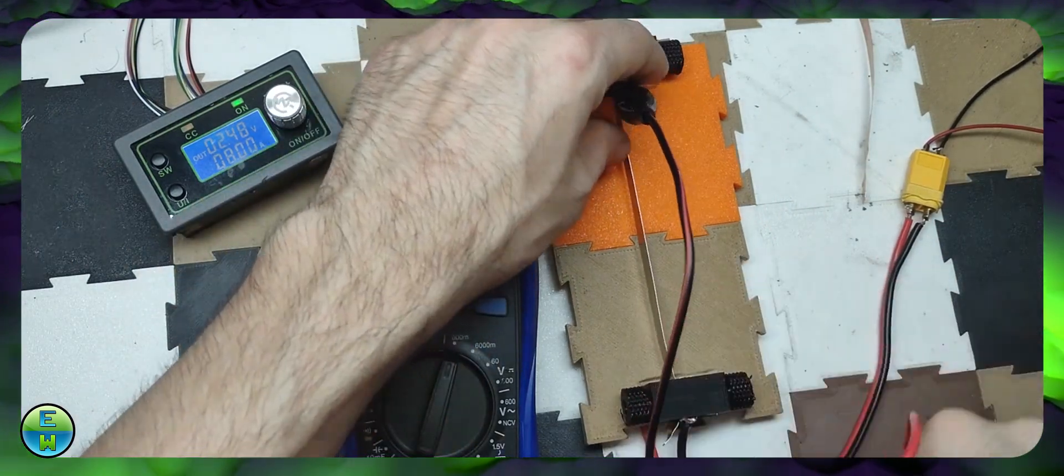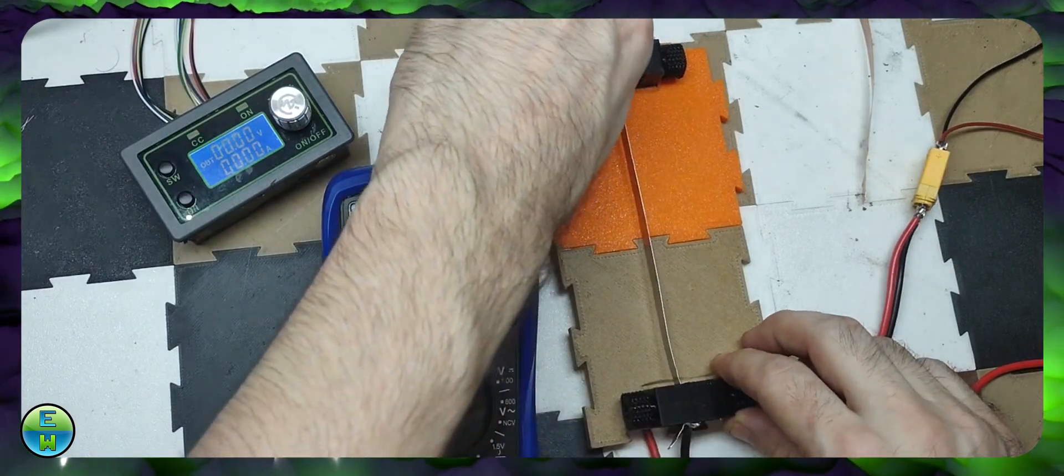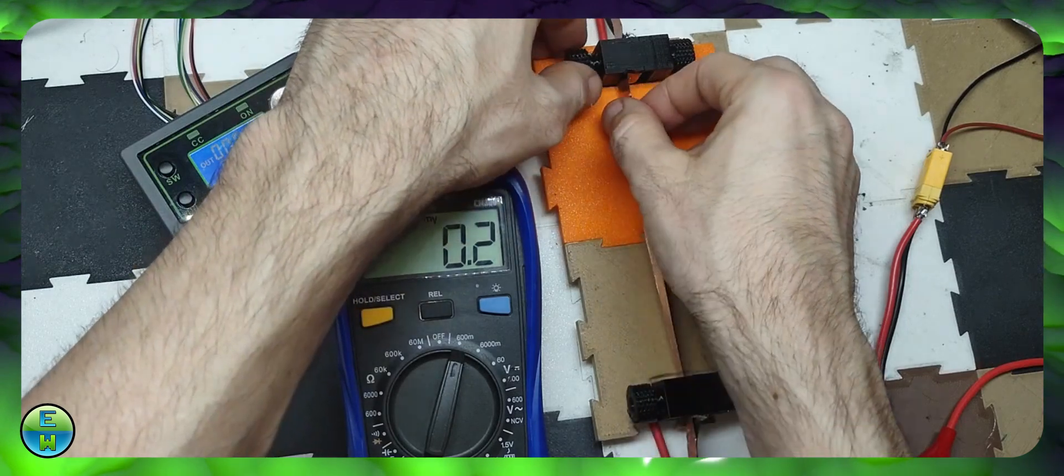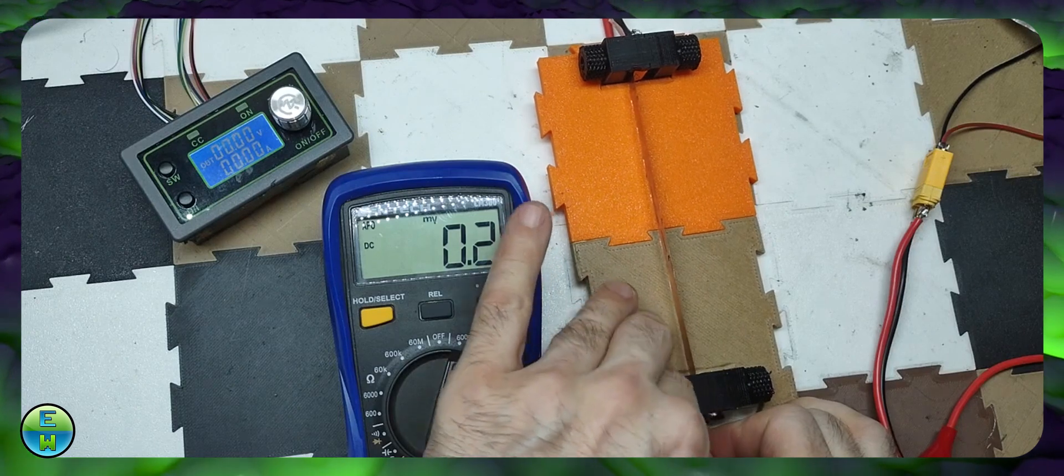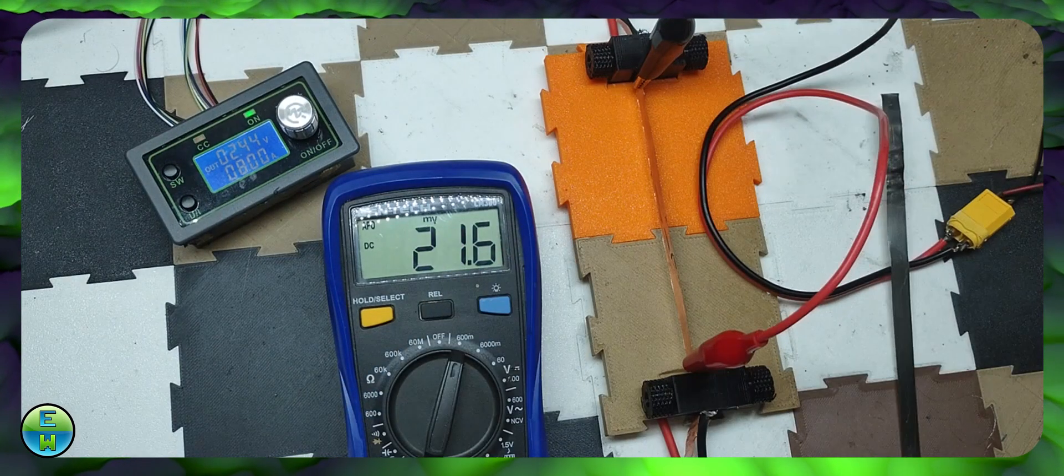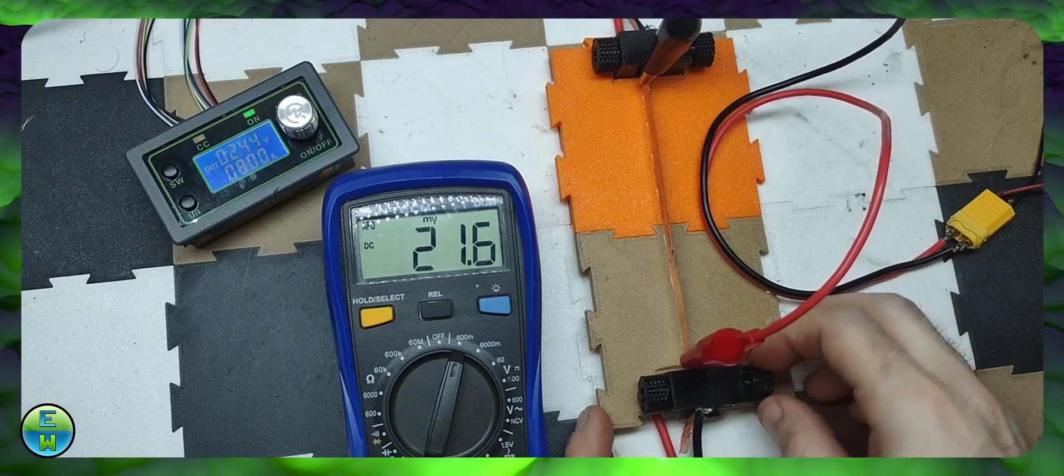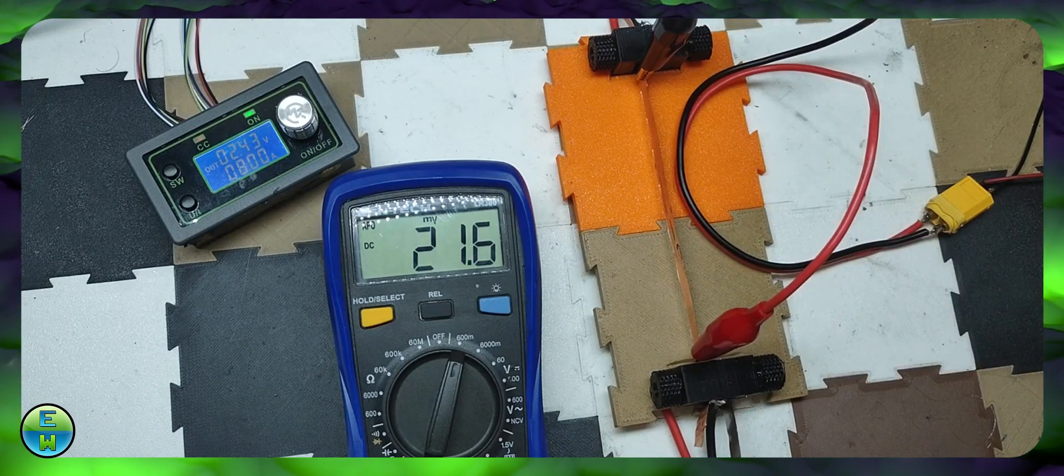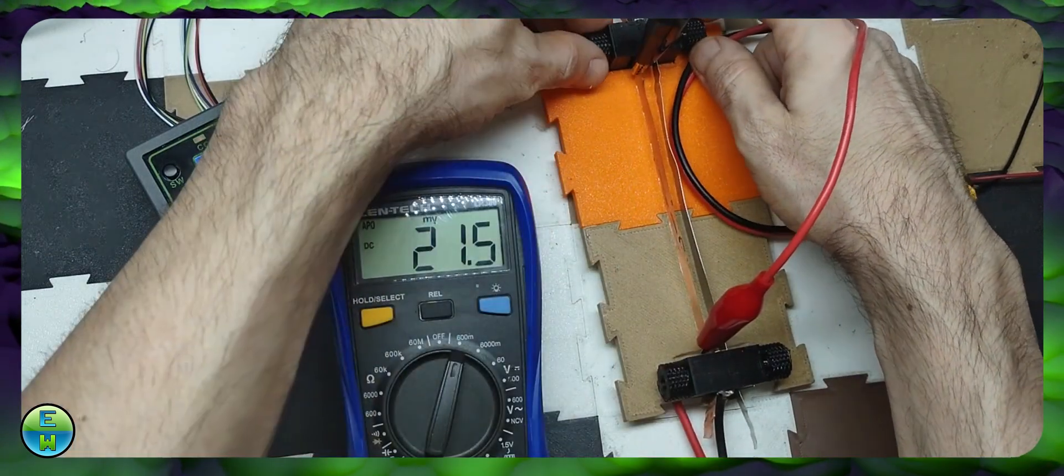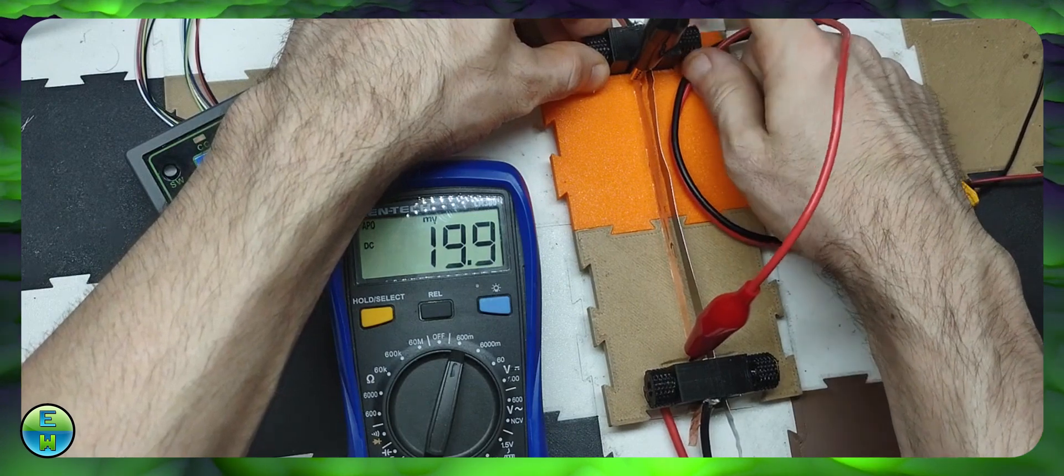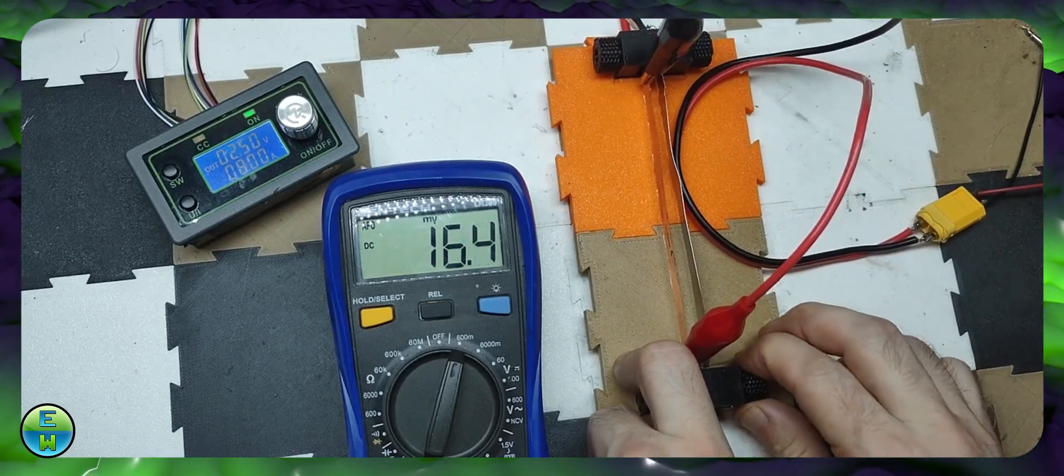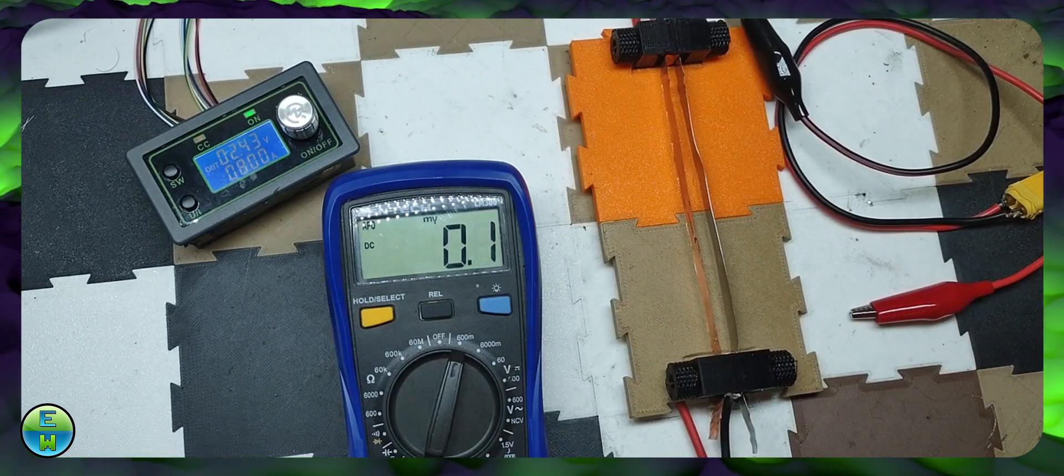So now let's see what the copper strip does. Significantly lower voltage drop. So now let's combine them in real time using this other post and see what happens to the voltage drop. So what do you think the voltage drop across the nickel is now?